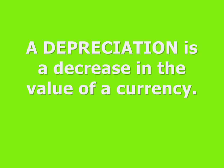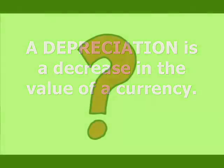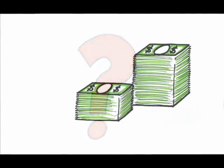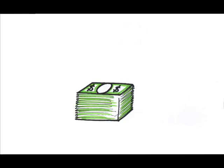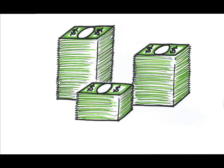Changes in demand for currency will affect the exchange rate. What about changes in supply? Ultimately, who is it that controls the supply of foreign currency? It's a foreign government. If the US wanted to drive the value of its own currency up, it would decrease the supply of dollars. If it wanted to drive the value down, it would increase the supply of dollars.